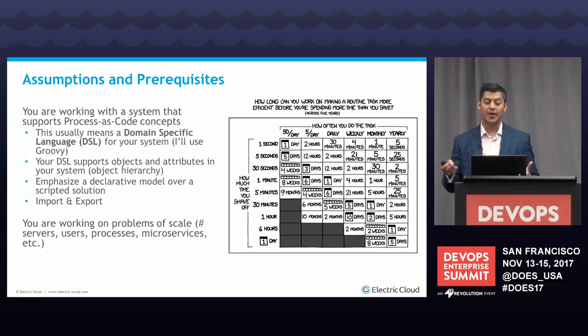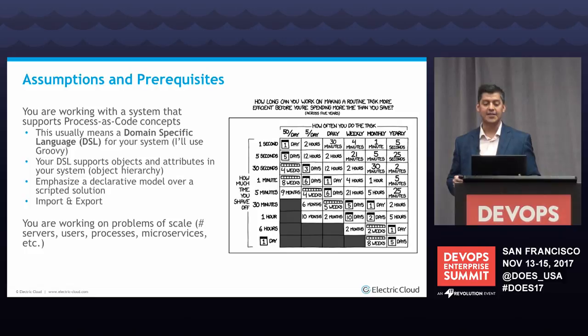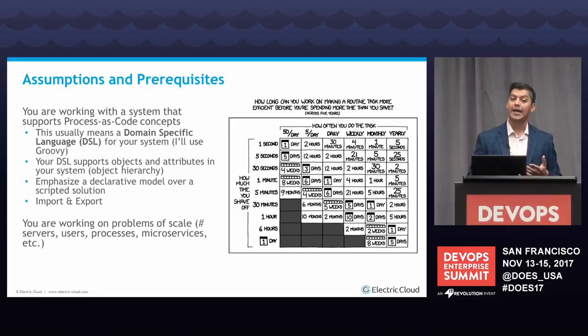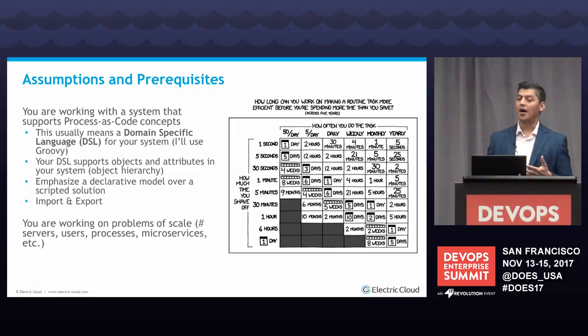When your DSL supports objects and their attributes or object hierarchy, I think that's a huge upside to the environment. Objects help you declare what your model looks like. In my world, I can declare an application, declare an environment, declare a process. In contrast, scripting doesn't have attributes if you're an object-oriented person, and that makes it really hard to understand process as code. I'll show you some examples of how object-natured process code helps you out.